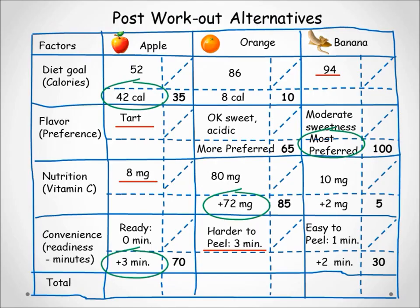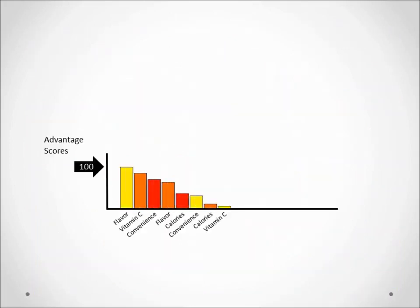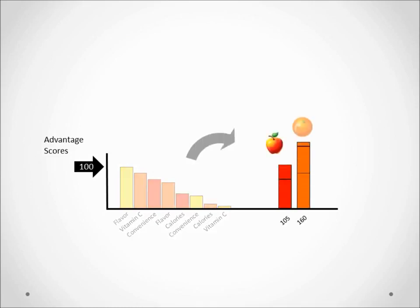Now it is time to add up the scores. In our example the orange came out with the highest score of 160, the banana second at 135, and the apple last at 105. To quickly illustrate what we have done so far: we identified and scored the advantages for the alternatives, then added them up.